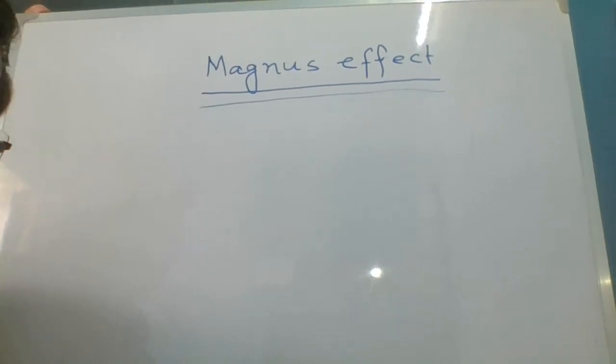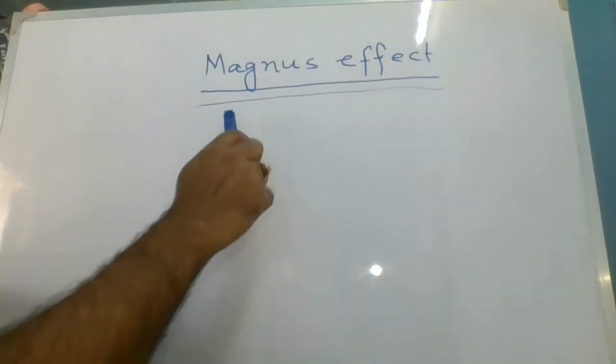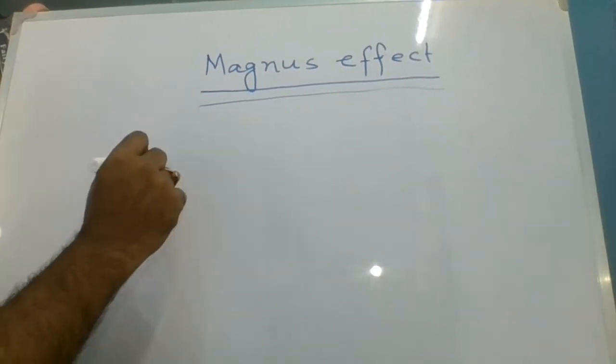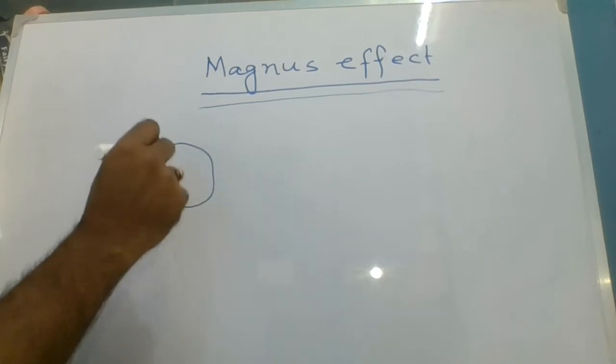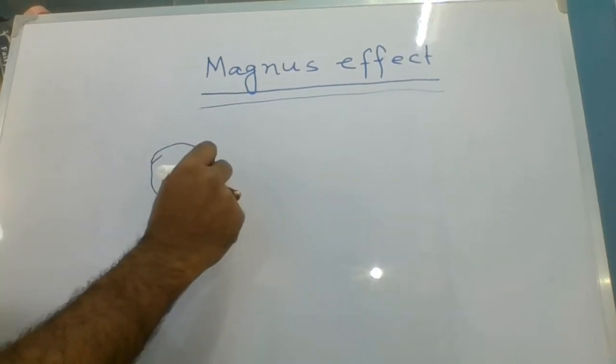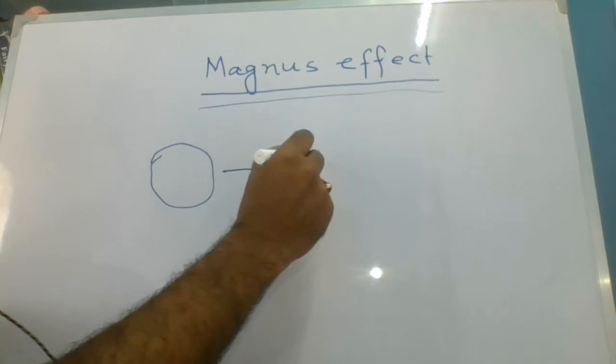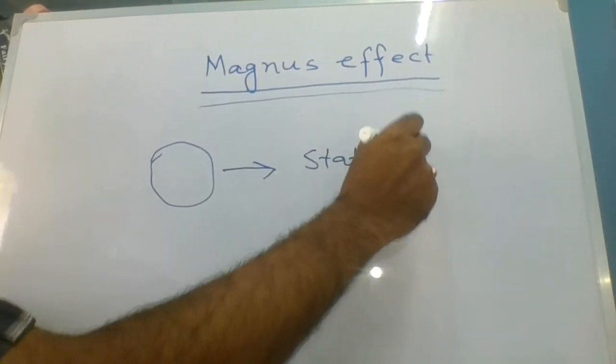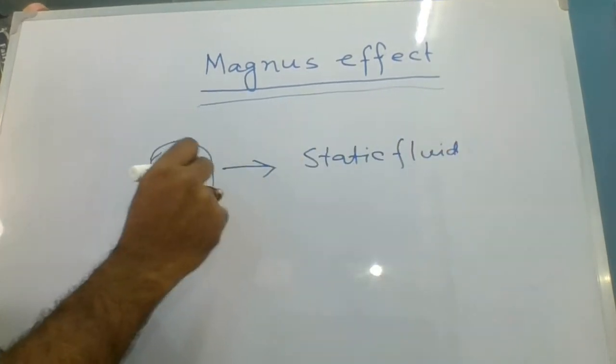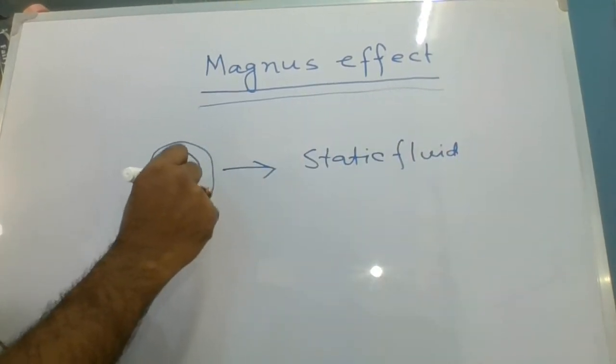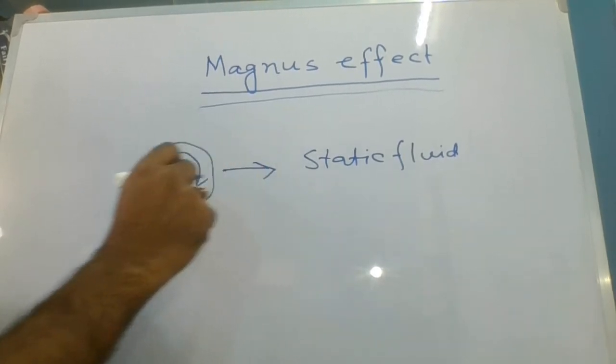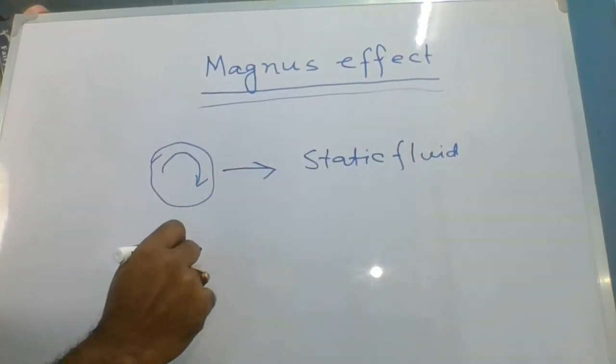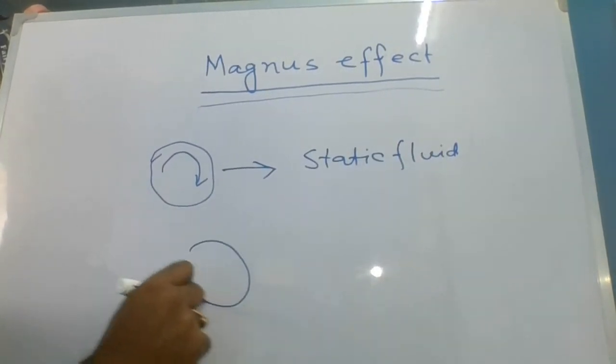What is Magnus effect? When a body moves in a static fluid and also rotates, or a rotating object moves and rotates in a static fluid.